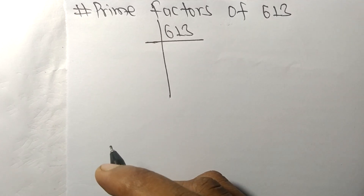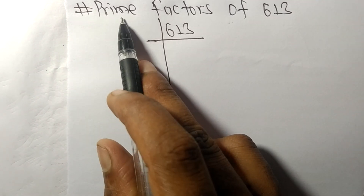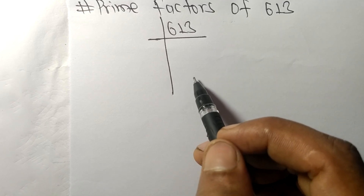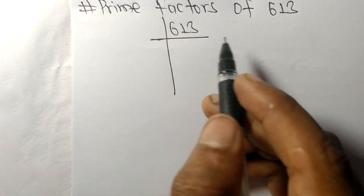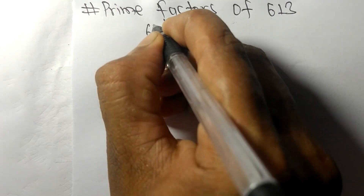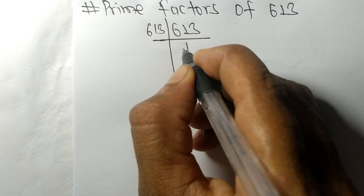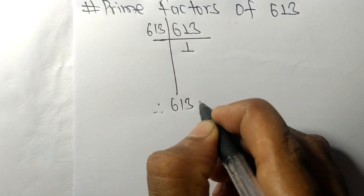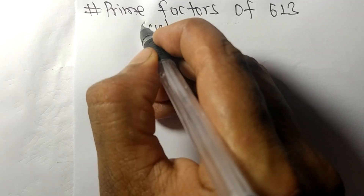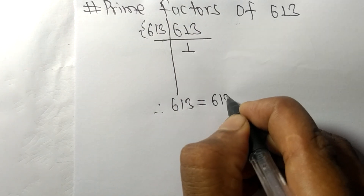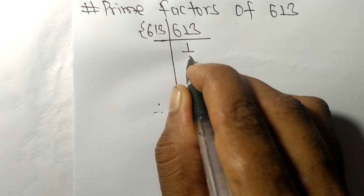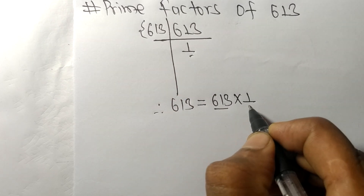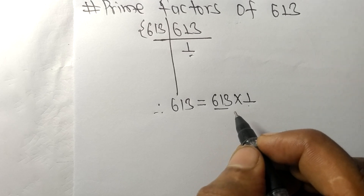Today we shall learn to find the prime factors of 613. Since 613 is a prime number, it is divisible by 613 itself and we get 1. Therefore, 613 equals 613 × 1, and so 613 and 1 are the prime factors of 613.